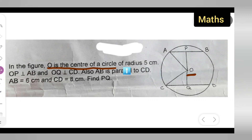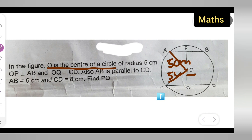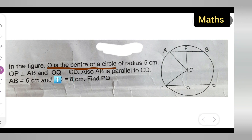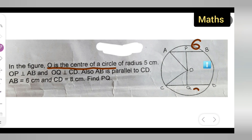Today's question: in the figure, O is the center of the circle of radius 5 cm. That means OA will be equal to 5 and OC will be equal to 5. OP is perpendicular to AB, and OQ is perpendicular to CD. Also, AB is parallel to CD. The value of AB is given to be 6 cm and the value of CD is given to be 8 cm.